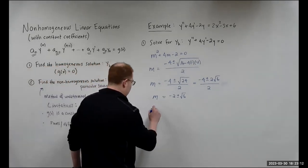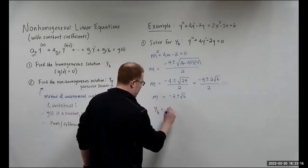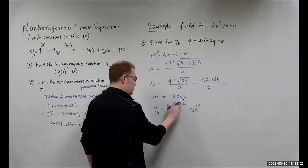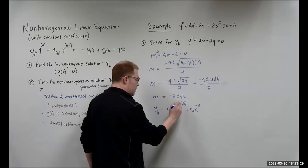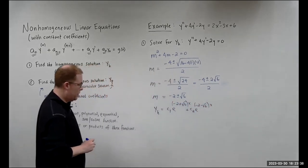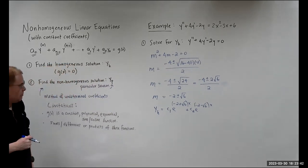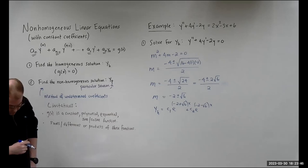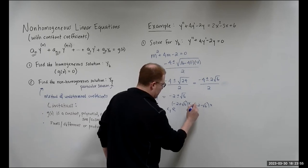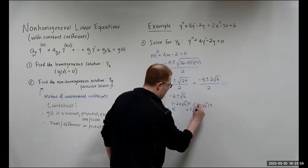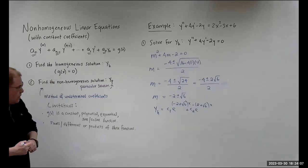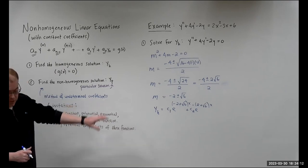So for case 1 — two distinct real roots — we have y of h = C₁e^((-2+√6)x) + C₂e^((-2-√6)x). There's our homogeneous solution.